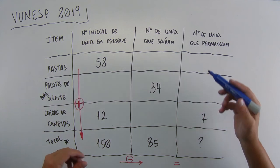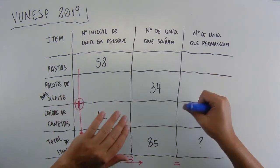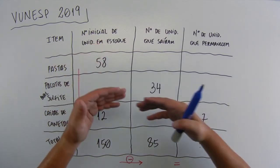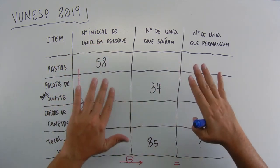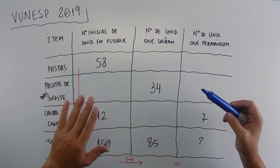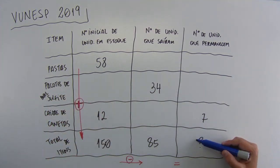The table shows some information about a stock, the number of units that there were, how many units left and how many remain after a weekly balance. We already understood. The total number of items that remain in this stock is - wow, he's asking exactly this here.